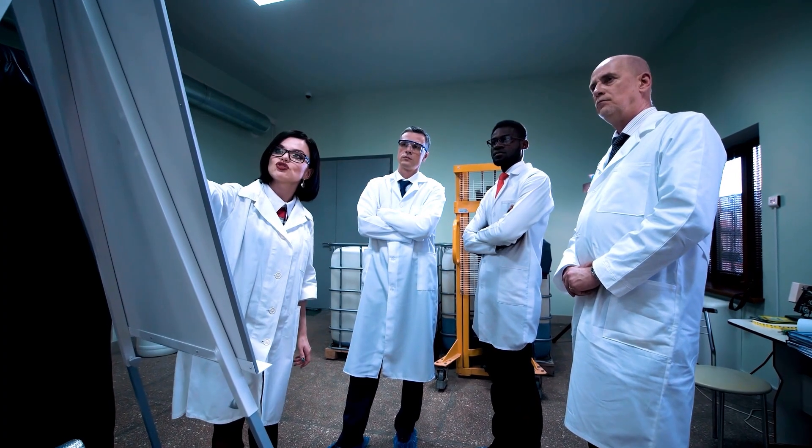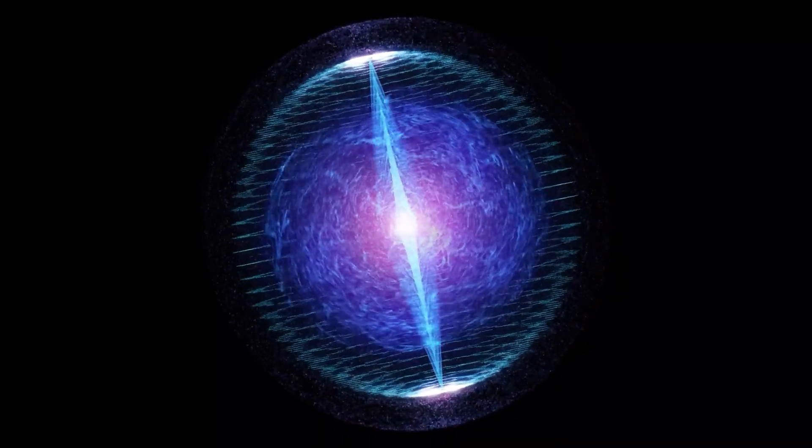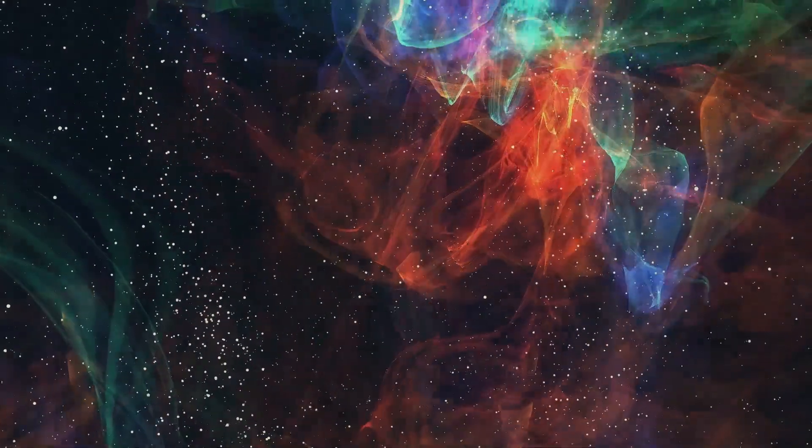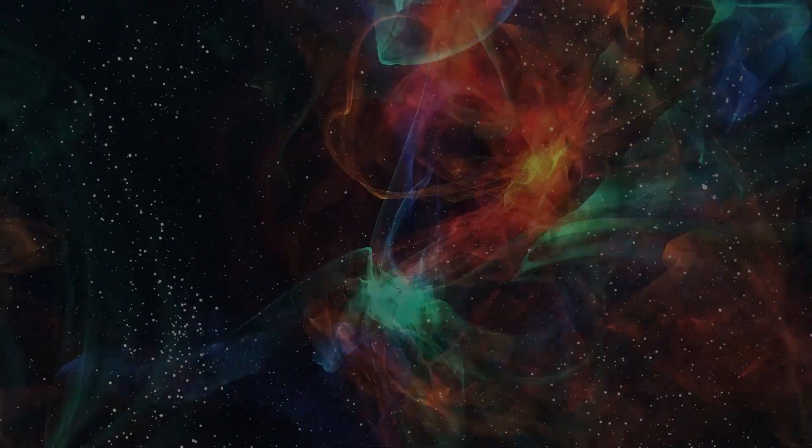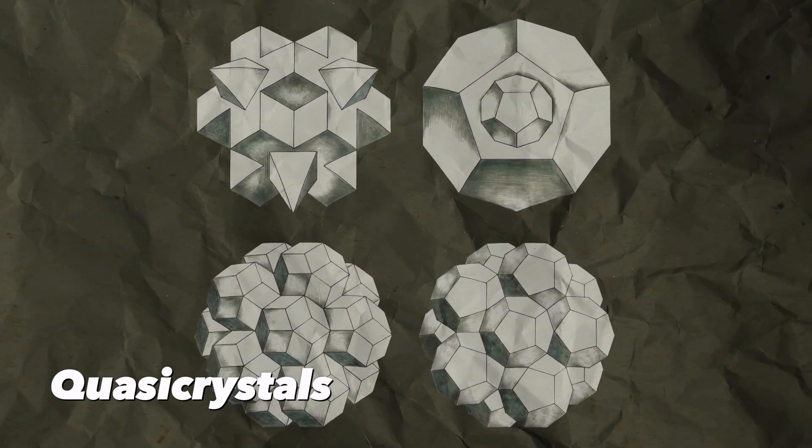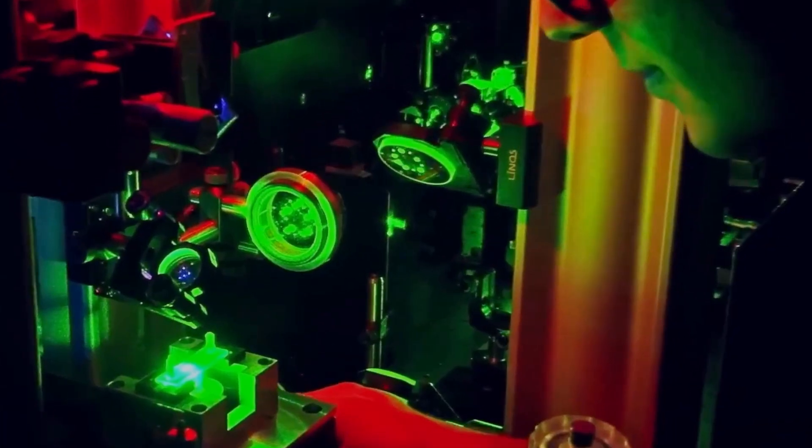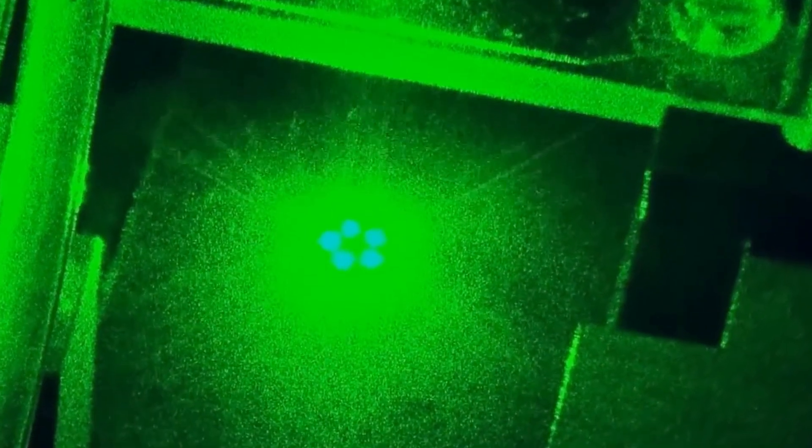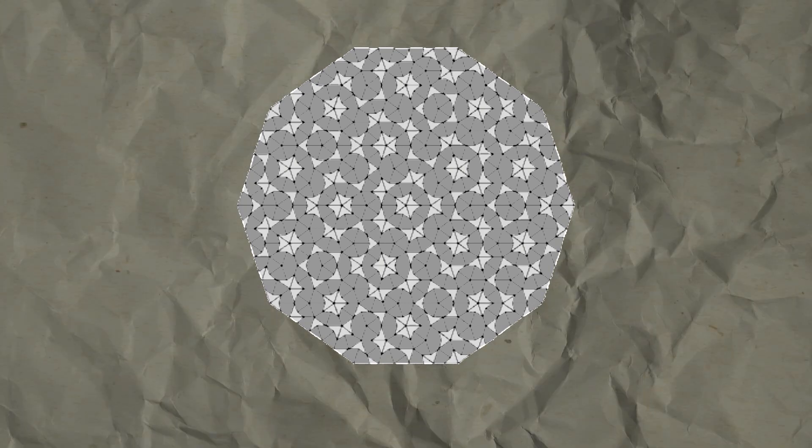Apart from entangled particles, there are other phenomena and elements that challenge our understanding of the nature of matter and reality. One of these elements is quasi-crystals. Unlike regular crystals that have a symmetrical structure, quasi-crystals have a non-repeating aperiodic structure that combines features of both crystals and glasses. This unique structure of the quasi-crystals involves the arranging of shapes in a non-repeating pattern based on a mathematical principle called Penrose tiling.